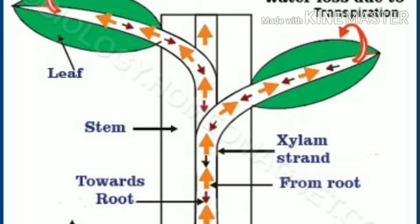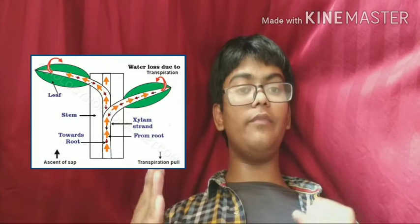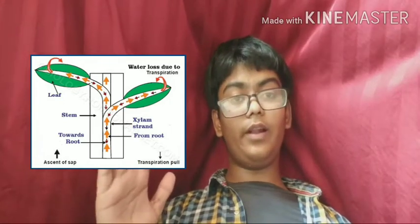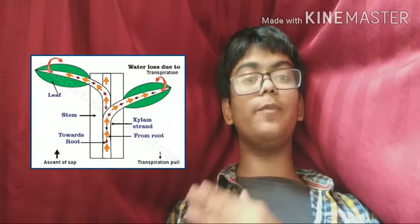Transpirational pull is a force exerted on the xylem vessel which helps it to take water in the upward direction. Since xylem's function is to conduct water from the roots to all parts of the plant — from down to up — a force is needed, and this force is the transpirational pull.